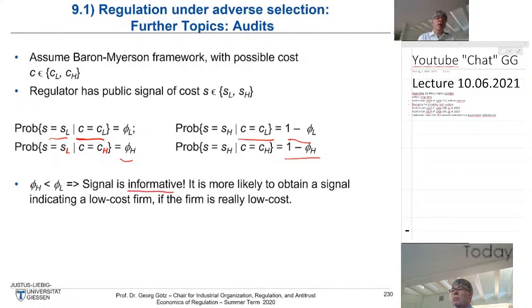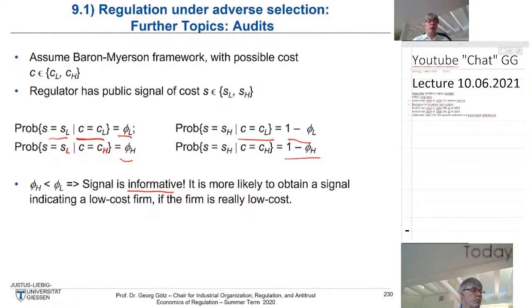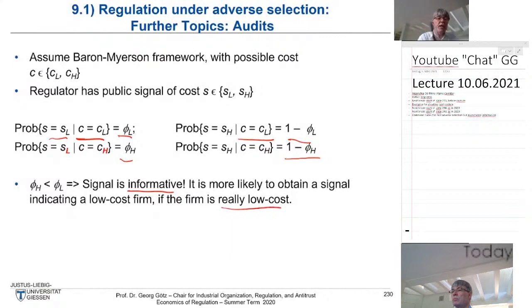Similarly, if the firm is really a high type, with probability phi_H the auditor mistakenly reports low cost. The crucial informativeness assumption is that phi_L > phi_H: a low-type firm is more likely to be correctly identified as low cost than a high-type firm is to be misidentified as low cost. This informativeness condition is what the regulator can exploit to implement the first-best outcome.